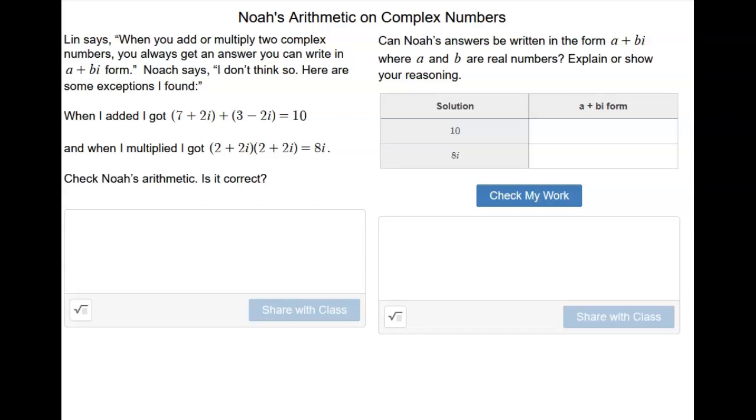So when Noah added 7 plus 2i and 3 minus 2i, he got 10. And when he multiplied these two, he got 8i.